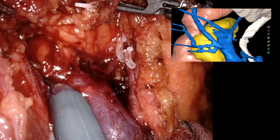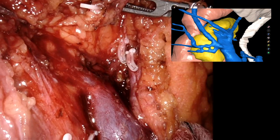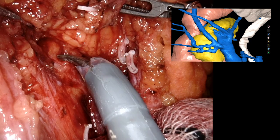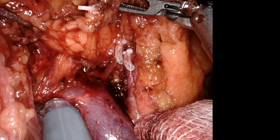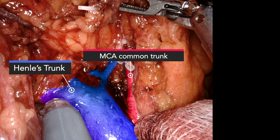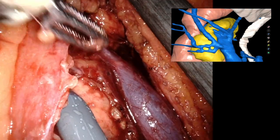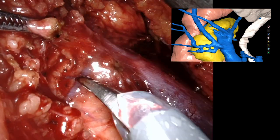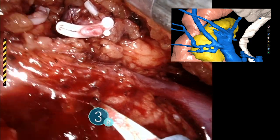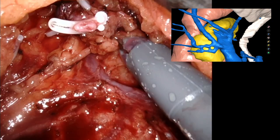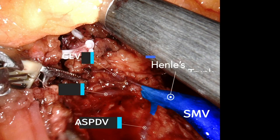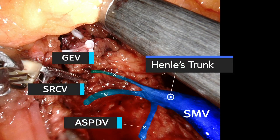Henle's trunk can now be visualised draining into the right lateral aspect of the SMV. As demonstrated on the 3D reconstruction, Henle's is formed by the confluence of the gastroepiploic, superior right colic, and anterior superior pancreatoduodenal veins. After each vessel is identified, the superior right colic vein is selectively clipped and divided, preserving the remaining veins.